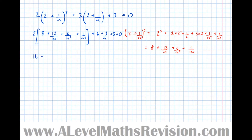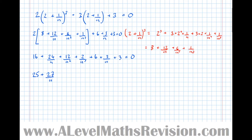Multiplying that out, we get 16 + 24/u + 12/u² + 2/u³ + 6 + 3/u + 3 = 0. Gathering up the 1/u terms: 24 + 3 gives 27/u. There's only one 1/u² term: 12/u². So we have 25 + 27/u + 12/u² + 2/u³ = 0.